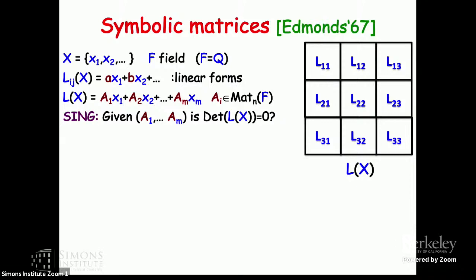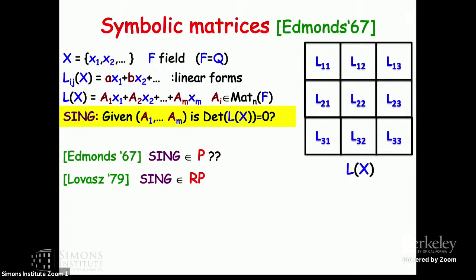Edmonds asked whether there's a polynomial time algorithm more than 50 years ago and we still don't know. This is easy if you allow randomization: the symbolic matrix can't be expanded because it has exponentially many terms, but if you plug random values into the variables over a big enough range, the chance of hitting zero when the determinant is not identically zero is negligible. So it's a really good probabilistic algorithm; we just care about removing the randomness to put it in P.